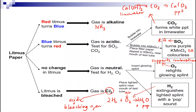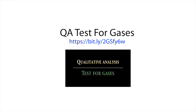If the bleaching agent turns the litmus paper white, that is the confirmatory result. That is all for tests for gases. You will try out these experiments in your lab during your practical session with your teacher. If you have any questions or need a recap on the practical skills of tests for gases, please refer to the YouTube video on tests for gases. Thank you, bye.